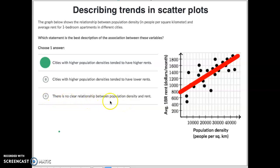And C, there is no clear relationship between population density. Well, it's not absolute, but I think it's fairly clear that the more people that live there, the higher the rent goes. So this would be a case where A, cities with higher populations tend to have higher rents. And that kind of makes sense, doesn't it? The more people that live there, the more you can charge people for rent. So that's that one.